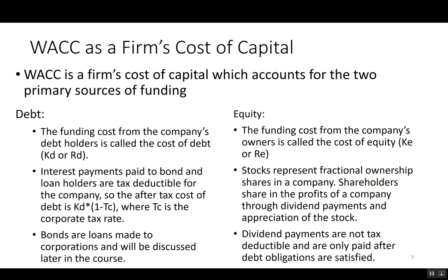We can think of WACC as the firm's cost of capital — how much it has to pay back to capital providers. WACC accounts for both sources of funding: debt and equity. Debt can be thought of as bank loans or bonds; the cost of debt is usually written as KD or RD. Interest payments paid to bondholders or banks are tax deductible, so the after-tax cost of debt is KD times one minus the corporate tax rate.